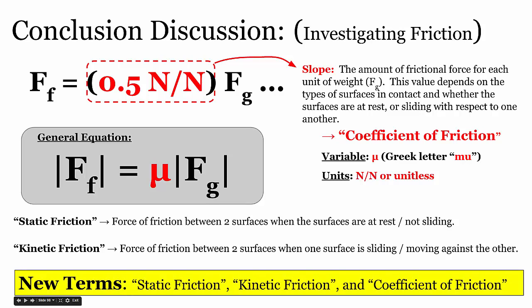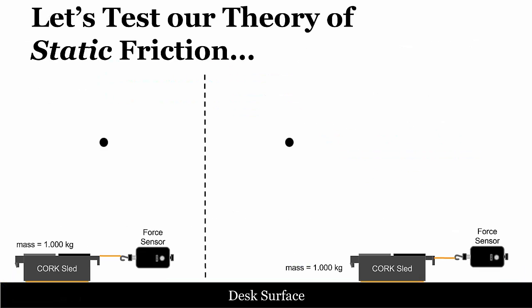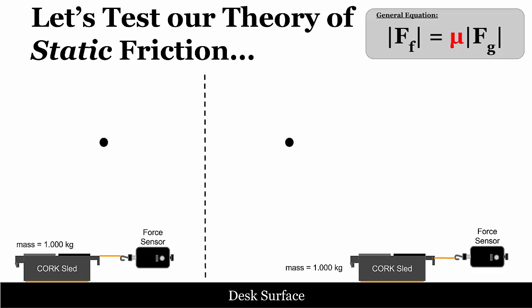So the new terms from our lab are three: static friction, kinetic friction, and the coefficient of friction. Let's test our theory of static friction. We think the force of friction depends on the size of the force of gravity on the object — multiply by the coefficient and you get the force of friction. If we have a cork sled and want to find the force needed to get it to move, we have to pull with as much force as the biggest static frictional force could possibly be.